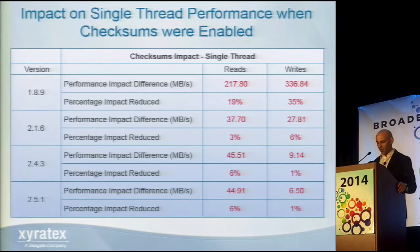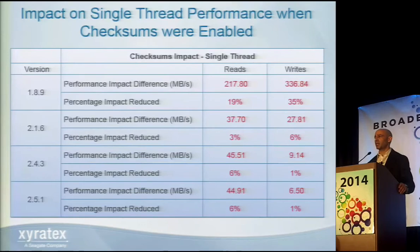The next slides move away from single thread performance and look at how to maximize storage throughput. The key goal was: how do we get 6 gigabytes per second read and write using all four client versions?